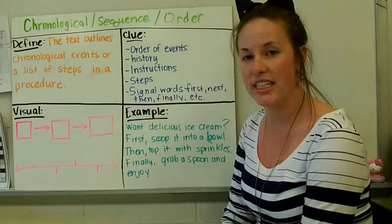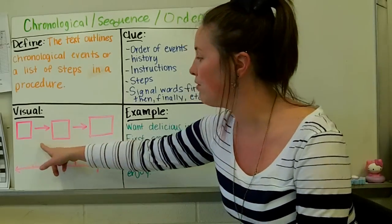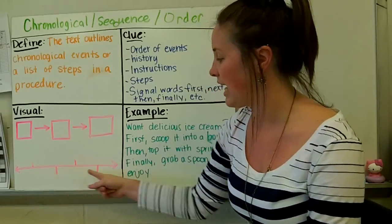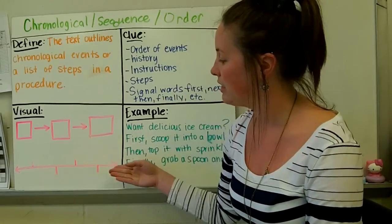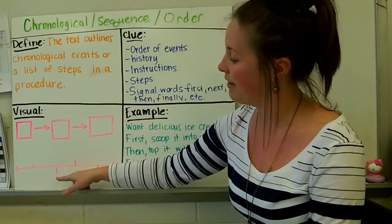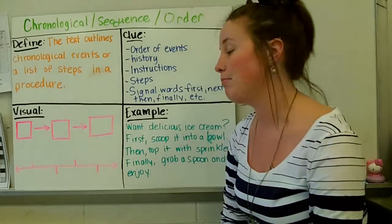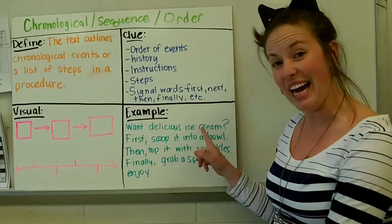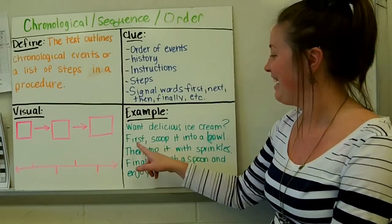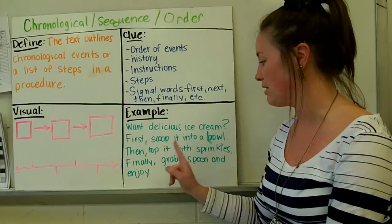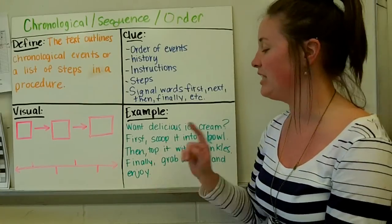There are two possible visuals that you could use. You could use a simple flow chart that shows the events and then moving forward. You could also use a timeline where you would draw the straight line and then add the events along the outside edges. So, an example. Want a delicious ice cream? First, scoop it into a bowl. Then, top it with sprinkles. Finally, grab a spoon and enjoy.